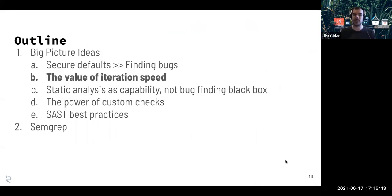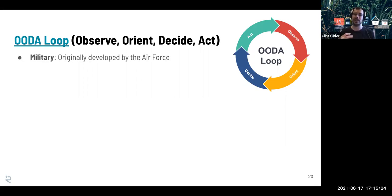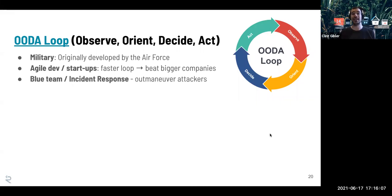Let's talk about the value of iteration speed. There's something called the OODA loop — Observe, Orient, Decide, Act — originally created in the air force. The faster you can be aware of your surroundings, put things in context, and take action, the more you win. This applies to agile development and startups too: a 10-person startup can sometimes build a product better than a massive company because they have a faster loop — building and shipping quickly, getting customer feedback, and arriving at something better than someone getting that feedback much more slowly.